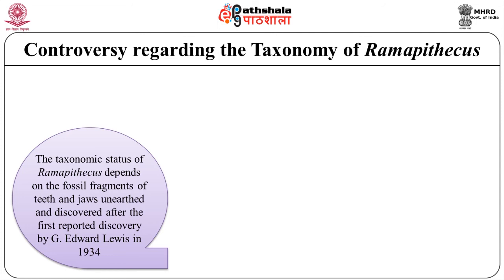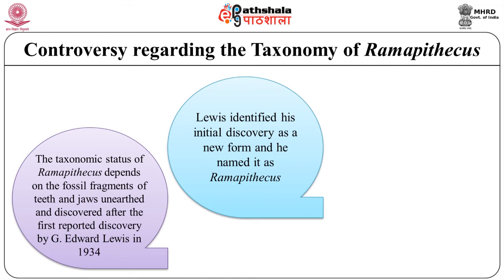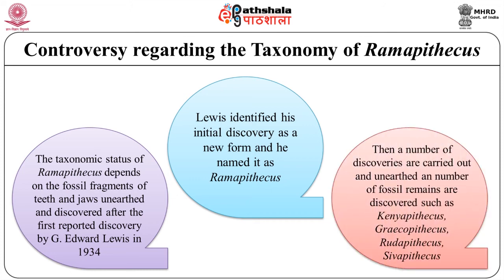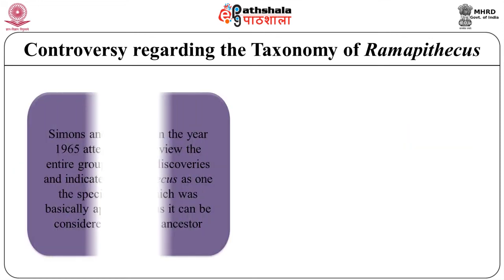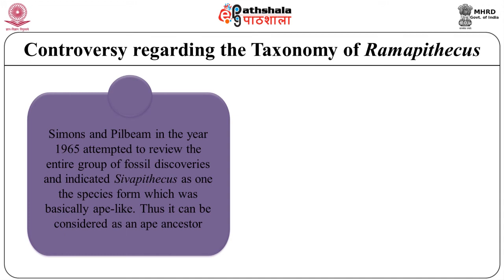The taxonomic status of Ramapithecus depends on the fossil fragments of teeth and jaw unearthed after the first reported discovery by G. Edward Lewis in 1934. Lewis identified his initial discovery as a new form and named it Ramapithecus. A number of subsequent discoveries unearthed fossil remains recognized as new forms, given separate genus and species names based on their geographical sites — such as Kenyapithecus, Graecopithecus, Rudapithecus, and Sivapithecus. Then Simons and Pilbeam in 1965 attempted to review the entire group of fossil discoveries and suggested that all the varied forms actually belong to just two species.